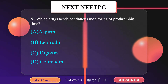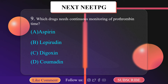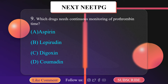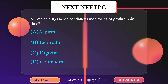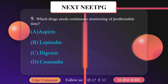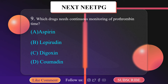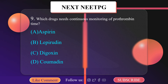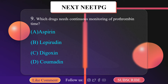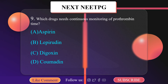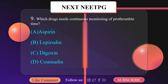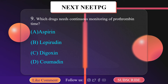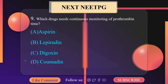Which drug needs continuous monitoring of prothrombin time? A. Aspirin, B. Lepirudin, C. Digoxin, D. Coumadin. Coumadin — the other name is warfarin. It is an anticoagulant. Warfarin is a coumarin anticoagulant used for prophylaxis and treatment of thromboembolic complications associated with cardiac valve replacement and atrial fibrillation, as well as prophylaxis and treatment of venous thrombosis. The correct option is D — Coumadin.